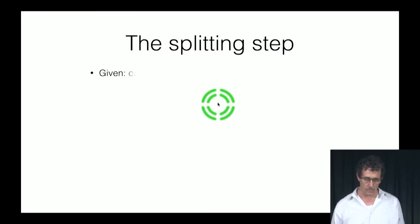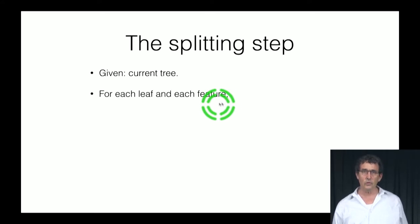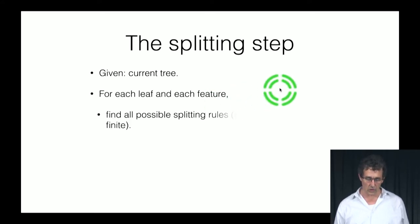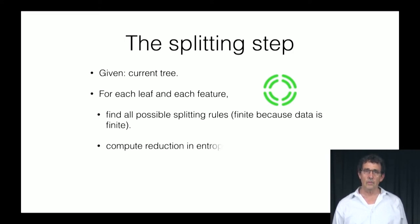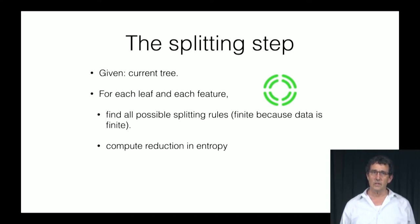We discussed the decision tree and talked in general about how learning a decision tree proceeds. Now we're going to get into the details and talk about how to choose the next splitting rule. Given a current tree, you check for each leaf and each feature, find all the possible splitting rules, and then compute the reduction in entropy. That's basically the overall way this works.